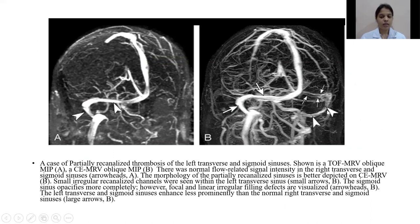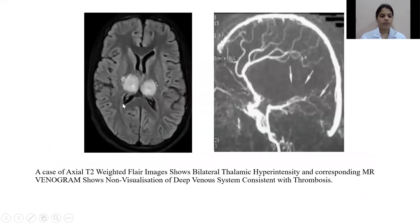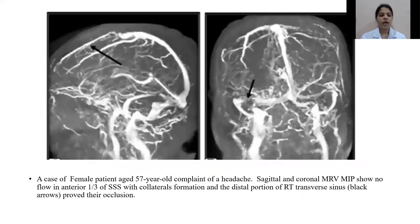These axial FLAIR images show bilateral thalamic hyperintensities, and the corresponding MR venogram shows non-visualization of the deep venous system, consistent with thrombosis. This image is of a 57-year-old female presenting with headache. The sagittal and coronal MRV MIP images show no flow in the anterior one-third of the superior sagittal sinus and also the distal portion of the right transverse sinus.